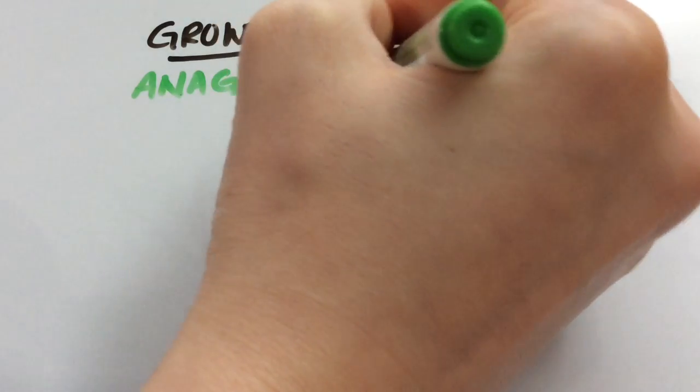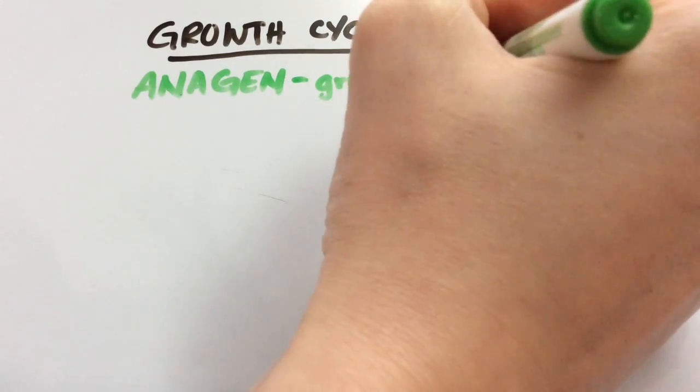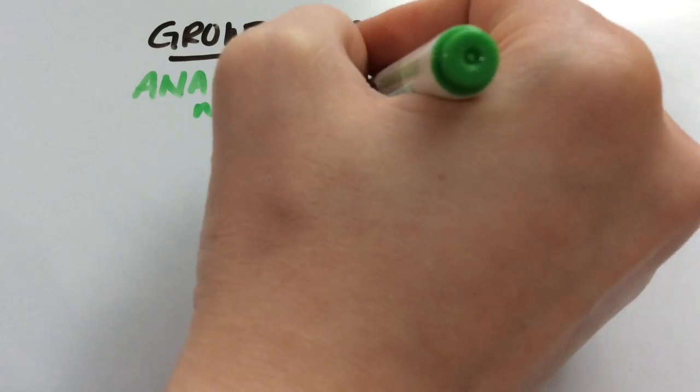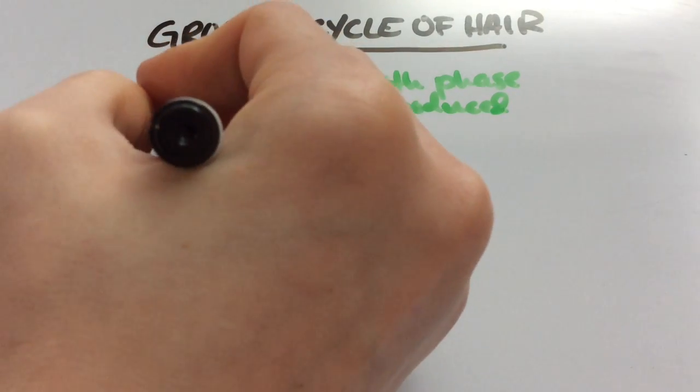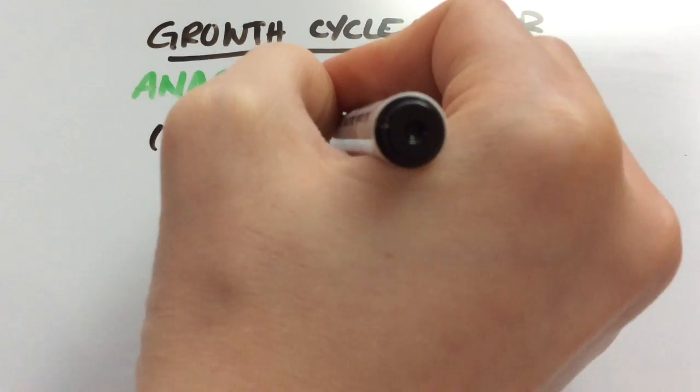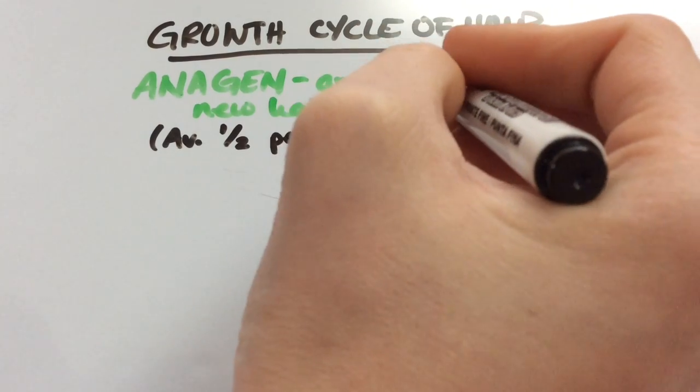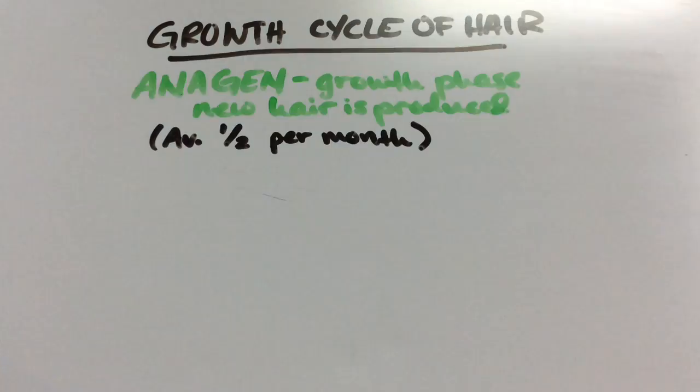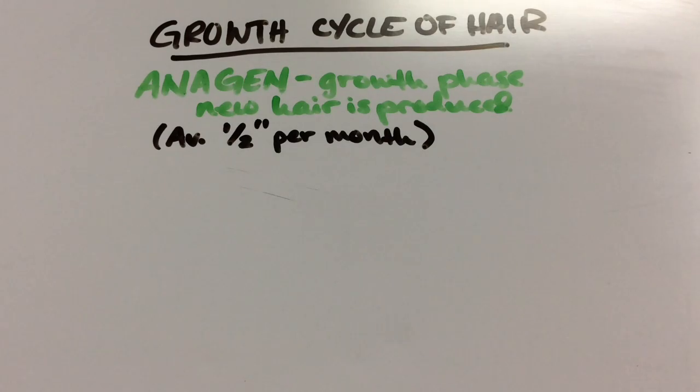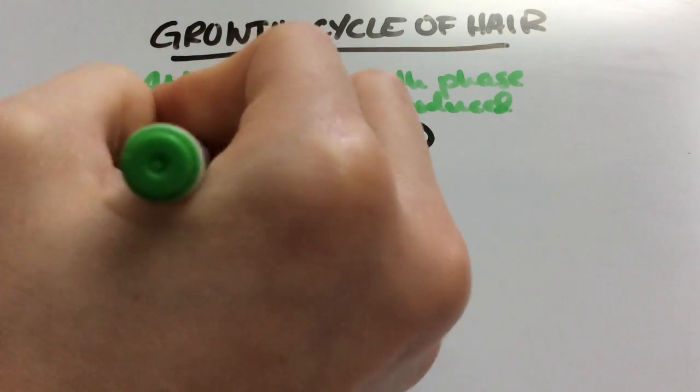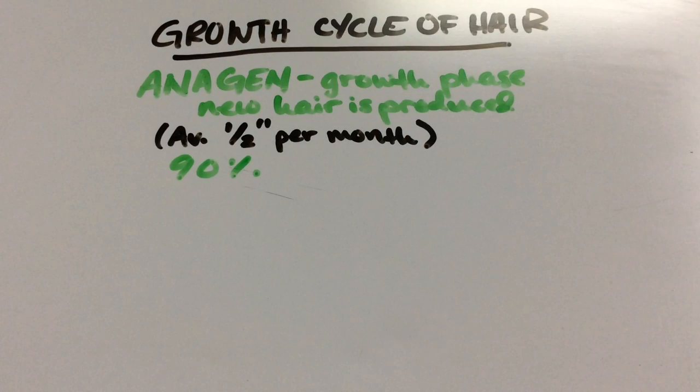It starts with the anagen phase - the growth phase where hair is produced. On average, healthy growth is about half an inch per month. Some experience more, but that's the average. About 90% of scalp hair is in the growing phase at any one time, and it generally lasts three to five years, but can last as long as 10 years.